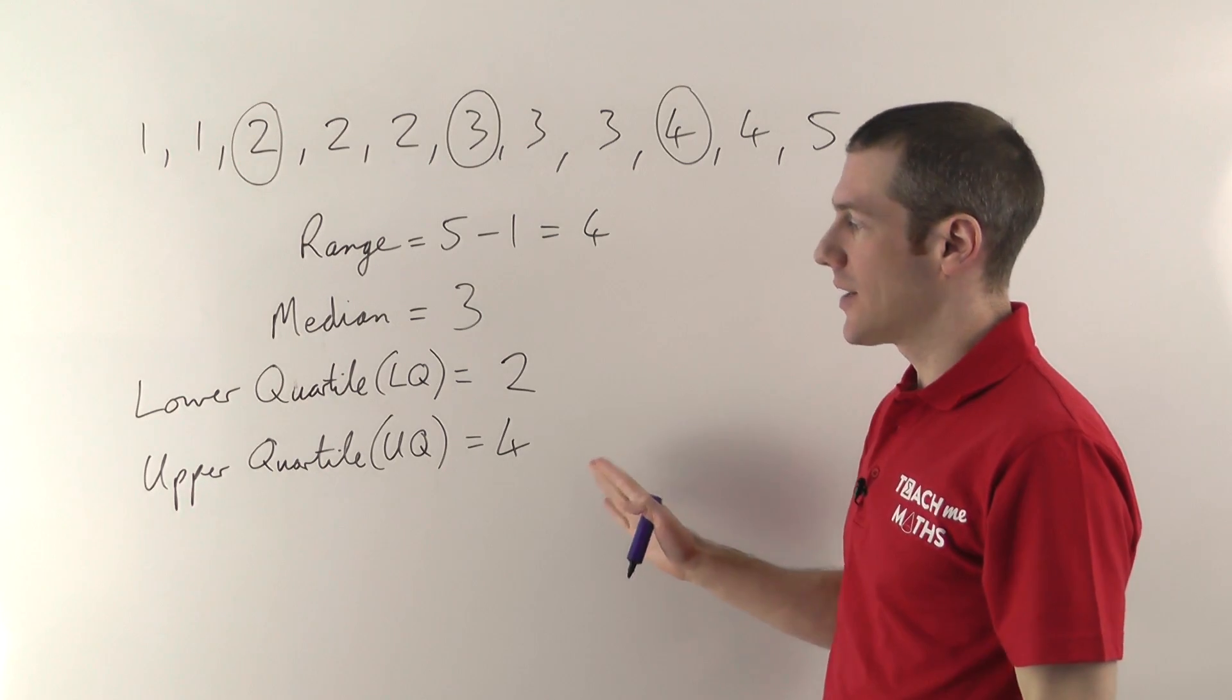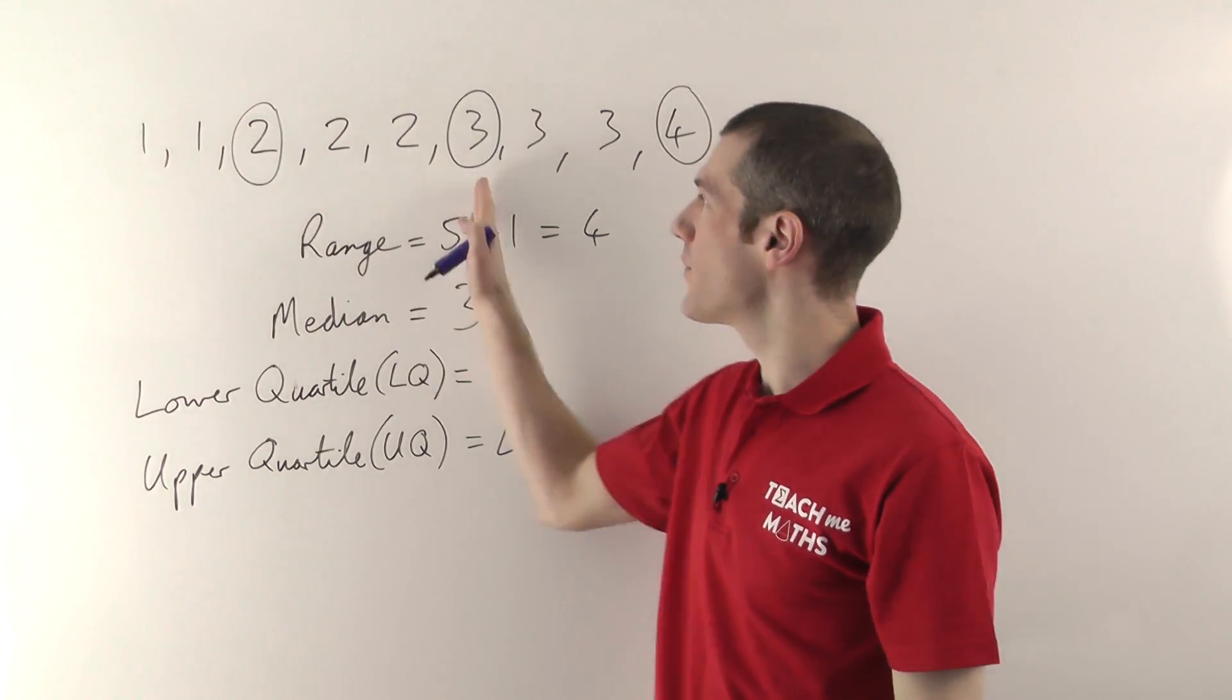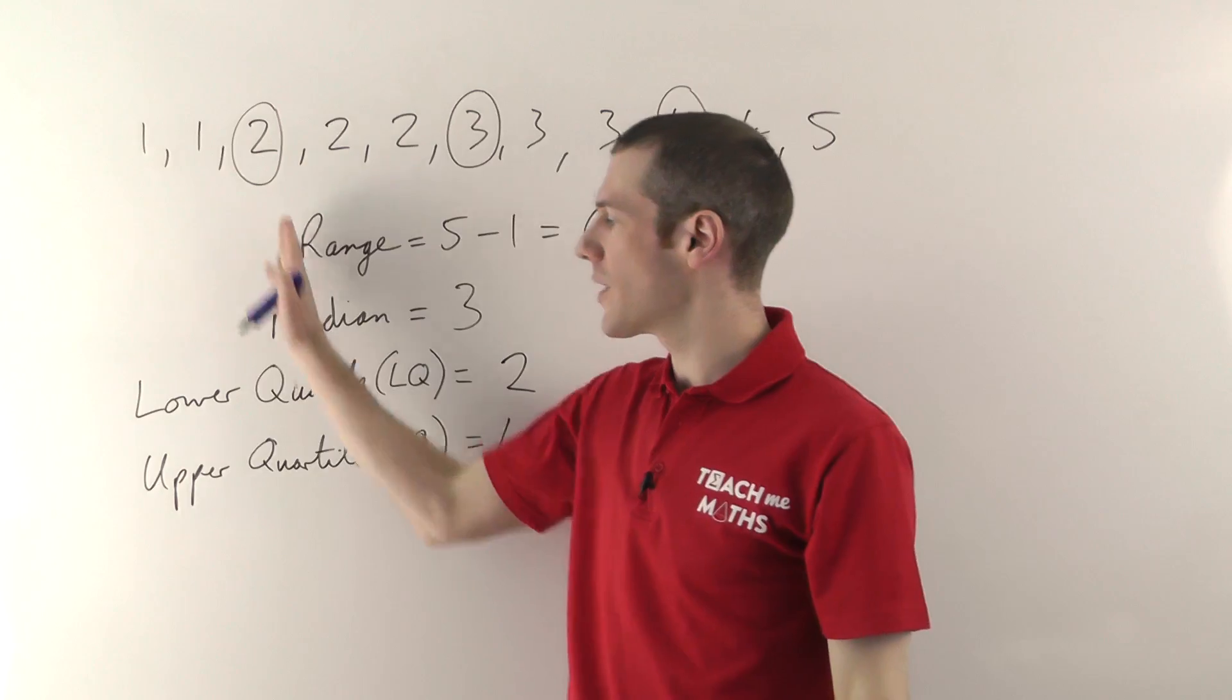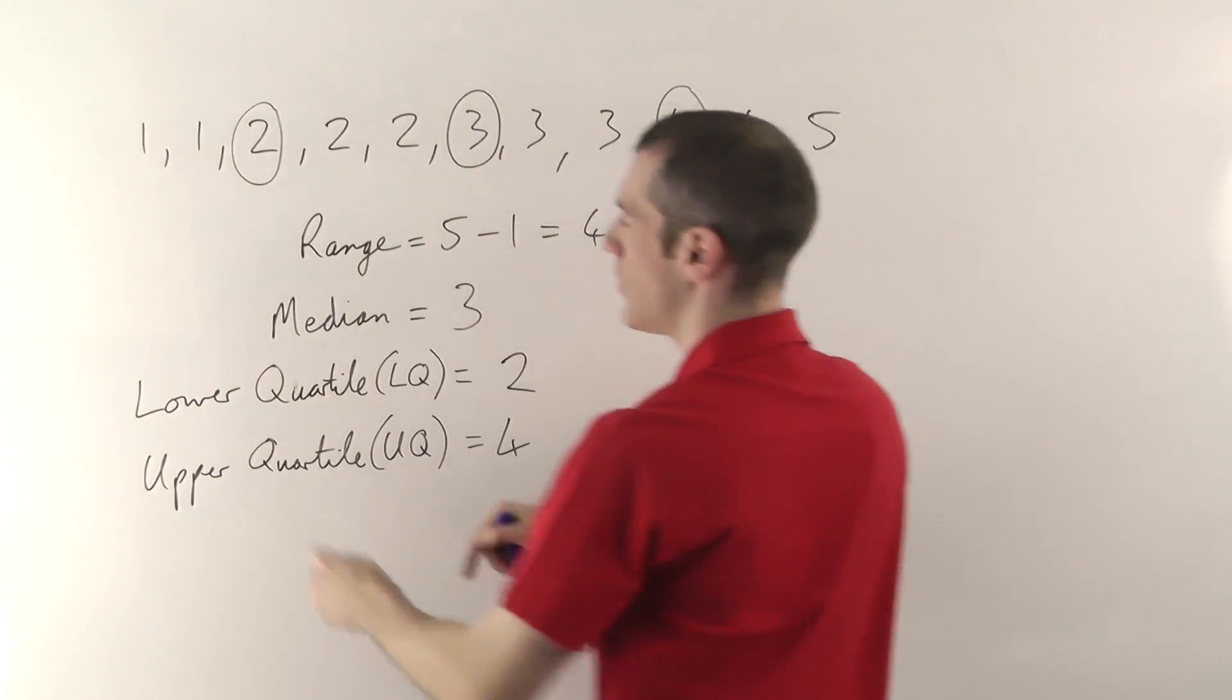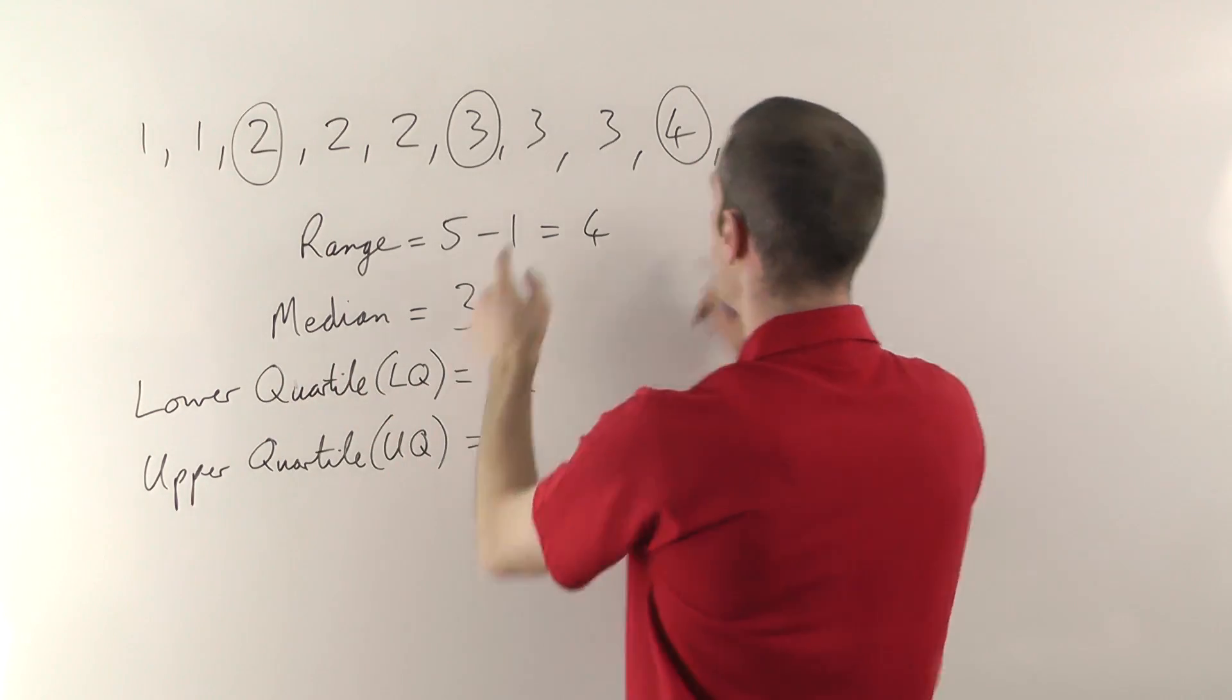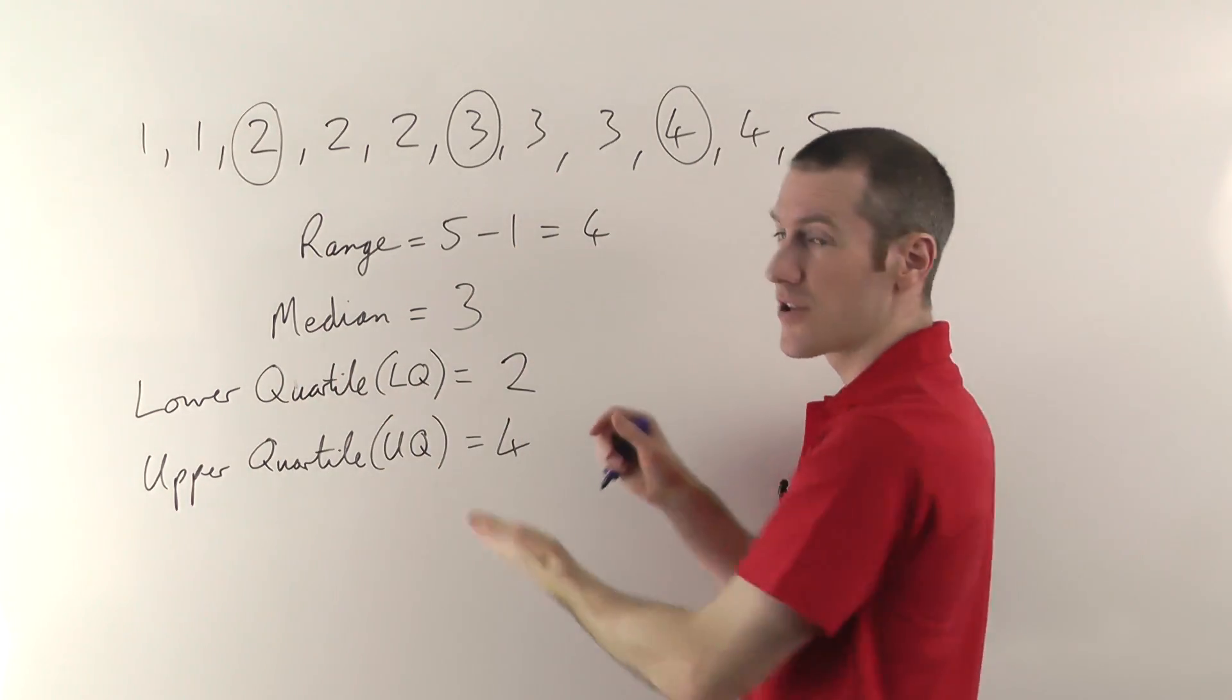So those are the key quartiles. As I say, median is halfway through, lower quartile is a quarter of the way through, upper quartile is 3 quarters of the way through. But you just pair in with the bottom half for the lower quartile, pair in with the top half for the upper quartile.